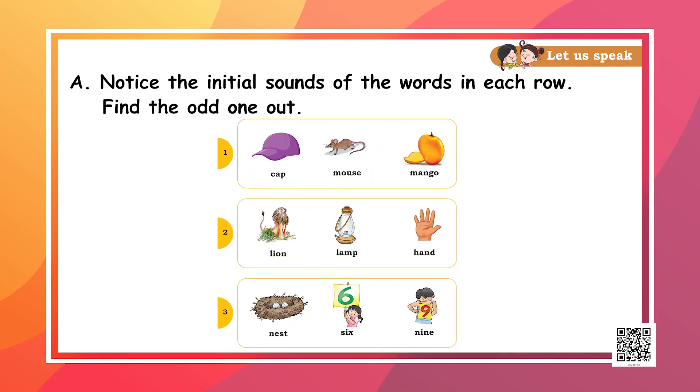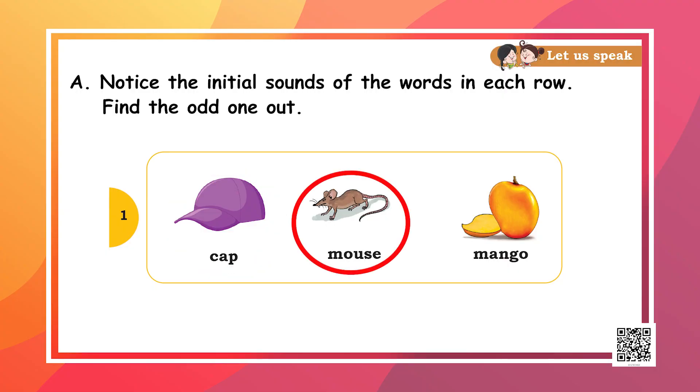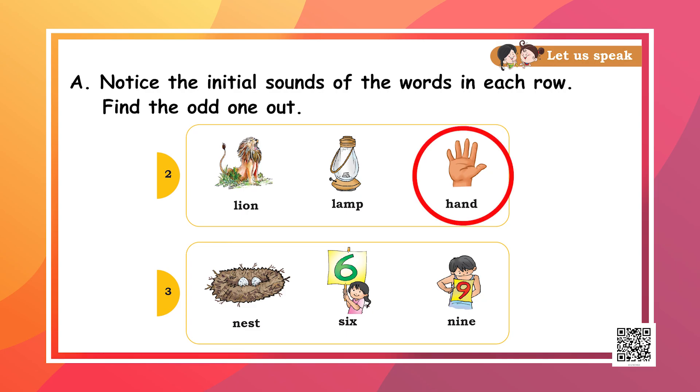After identifying the first sound of all the words, I think you will be able to do the next task much quicker. Let's look at these pictures and focus on the beginning sound. I see one word does not have the same beginning sound as the other two. For example, 'cap', 'mouse', 'mango' — the odd one out is 'cap' and we will circle that word. Similarly, let's say the words and identify the odd one out.